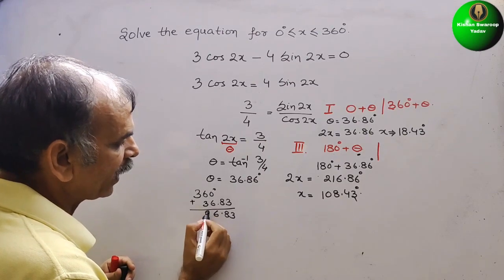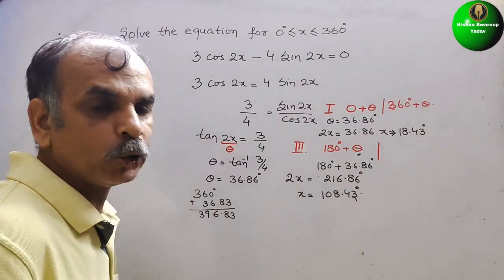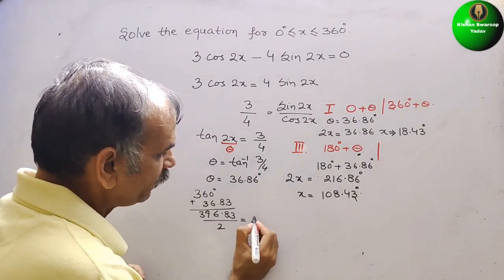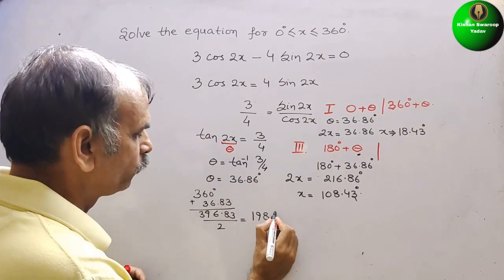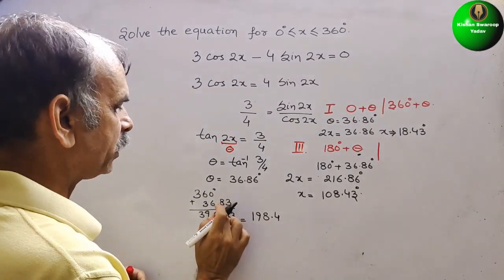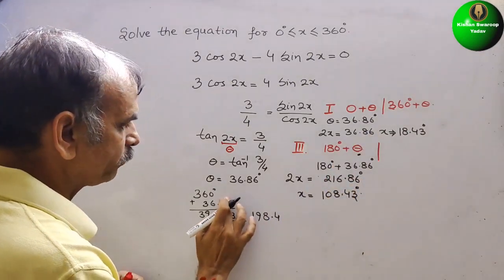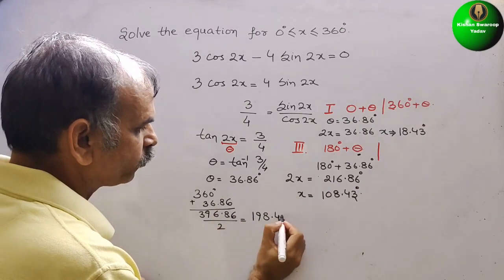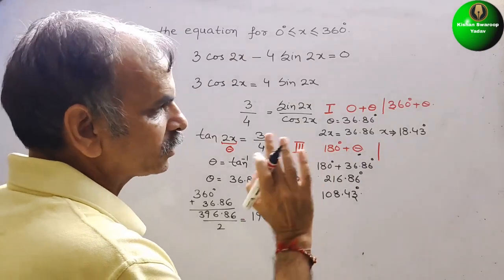So we get 396.86. Just divide it by 2. We will get 198.43 degree. So this is your three solutions for this.